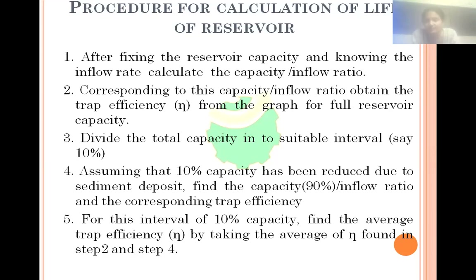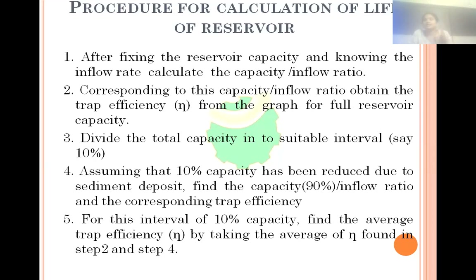Next, divide the total capacity into suitable intervals — that means if we get 90 percent trap efficiency, we divide the capacity in intervals of 10 percent: 90, 80, 70, 60, down to 20 percent. So if we have 100 TMC capacity of a reservoir, we take 90 TMC first, then 80 TMC, 70 TMC, down to 20 TMC. The reservoir capacity will be reduced from 100 TMC to 20 TMC.